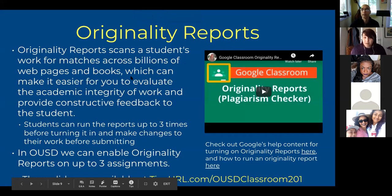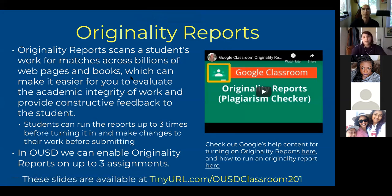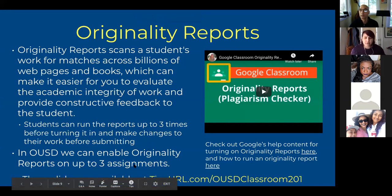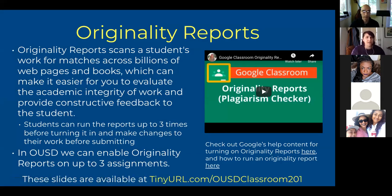I also want to talk about originality reports — another form of feedback Google Classroom offers. It's very similar to Turnitin. Originality reports scan the internet to look for matches to your students' work. Students can run them up to three times before turning in and use that feedback to make changes to their work. In OUSD, we have a version of Google Classroom that allows us to use originality reports only three times total, so be judicious about when you want to use them.